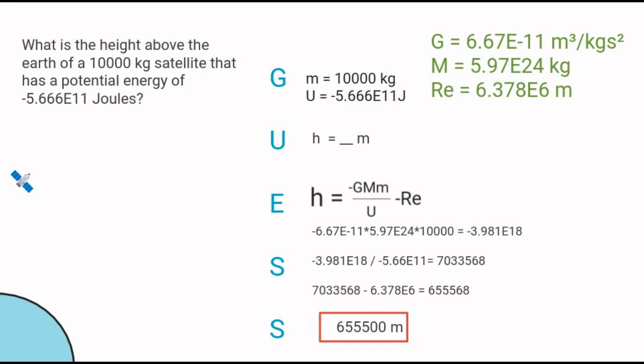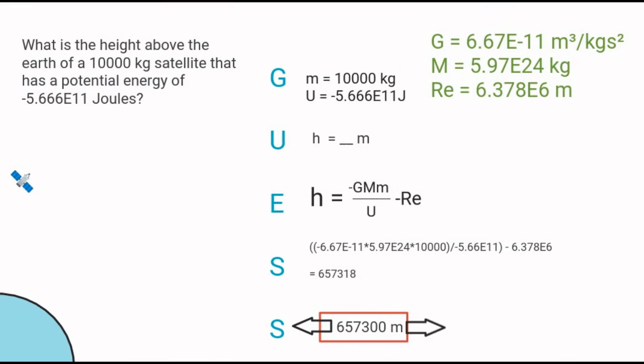Something I want to point out: I'm going to do this exact calculation again, except this time I'm going to plug it all in at once. Notice I get an apparently very different answer—657,000 instead. The same calculation, just done all at once, increased by 2000.